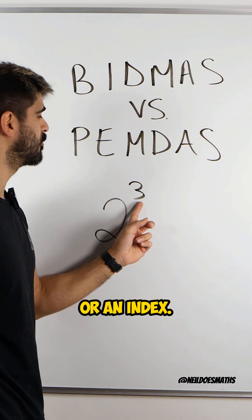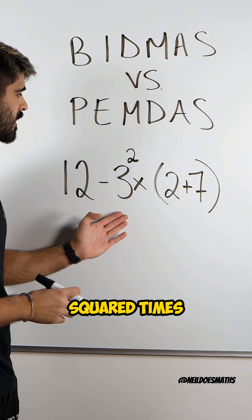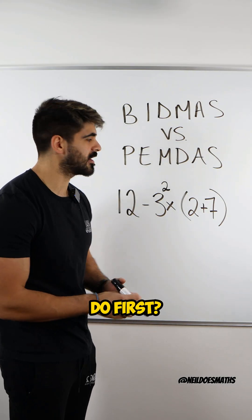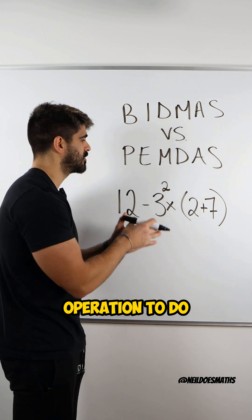That is known as an exponent or an index. So take a look at this example: 12 minus three squared times bracket two plus seven. What do we do first? In maths, we have these so that we know which order of operation to do first.